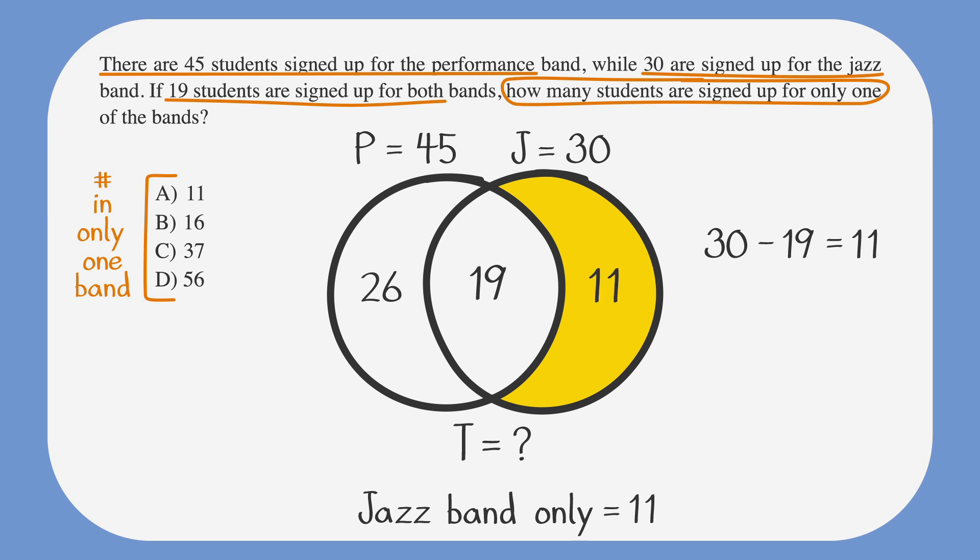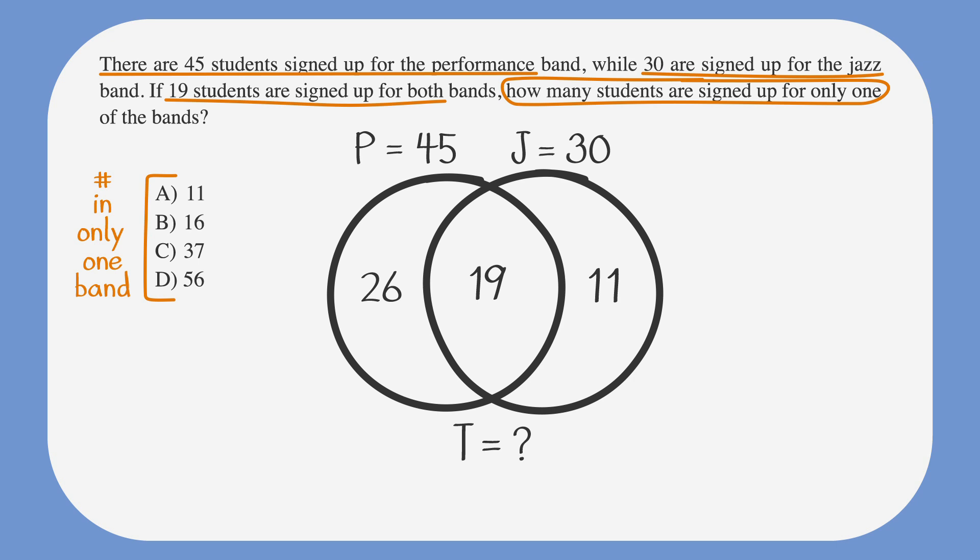We want to note that on the diagram. We have the number of students only in the jazz band and the number of students only in the performance band. By adding these together, we can find the total number of students only in one band. If we add these numbers together, we get 26 plus 11, which is 37. 37 students are only in one band or the other.